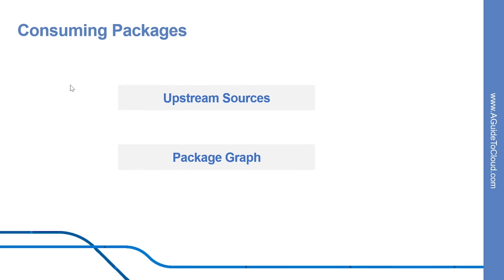Now let us discuss how you can consume these packages. Each software project that consumes packages to include the required dependencies will need to use the package manager and one or more package sources. We have two models: upstream sources and package graph. For upstream sources, one way to specify multiple package sources is by choosing a primary source and specifying an upstream source. The package manager will evaluate the primary source first and switch to the upstream source when the package is not found there. The upstream source might be one of the official public sources or a private source, and it could refer to another upstream source itself, creating a chain of sources.